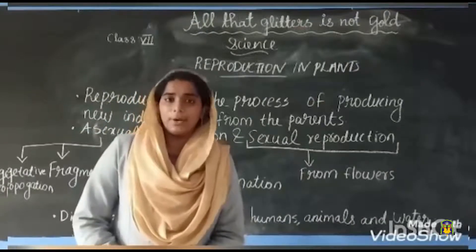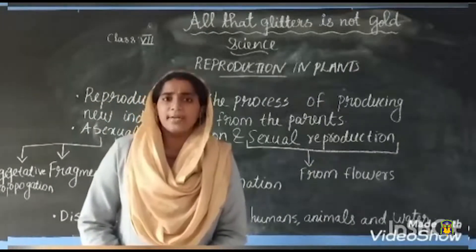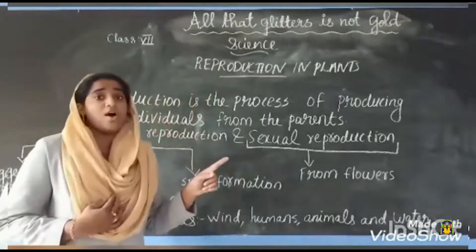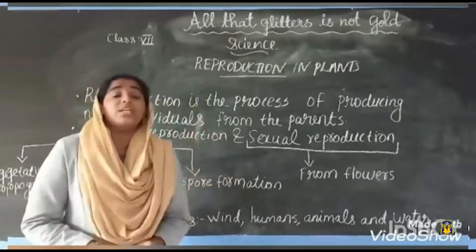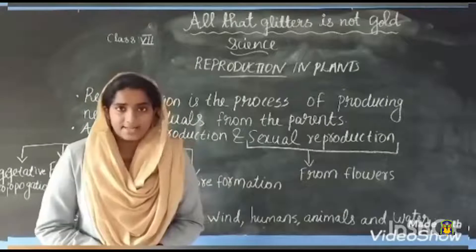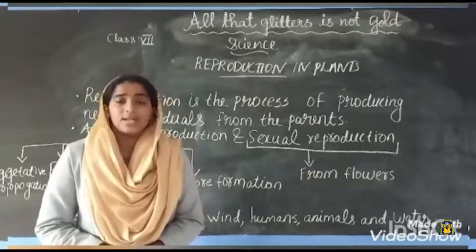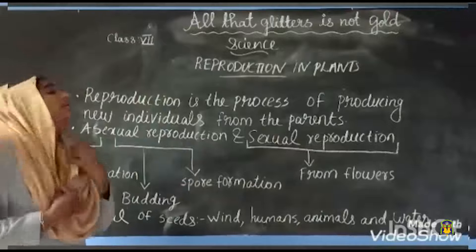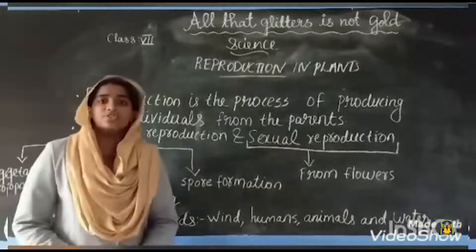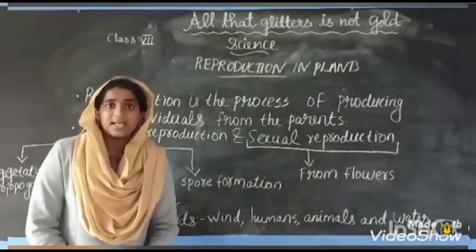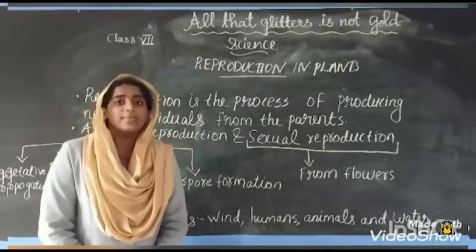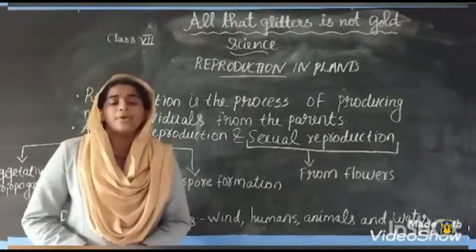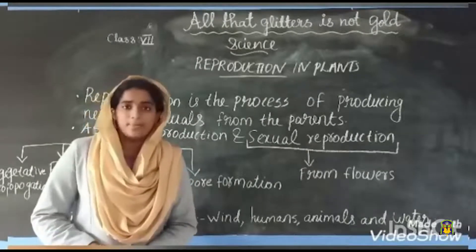First of all, reproduction. What is reproduction? Reproduction is the process of producing new individuals from parents. There are two types of reproduction: sexual reproduction and asexual reproduction.